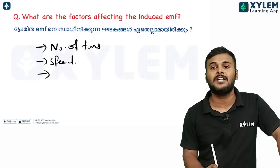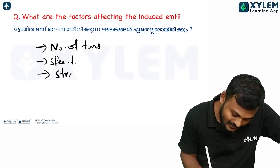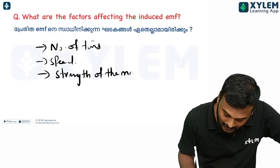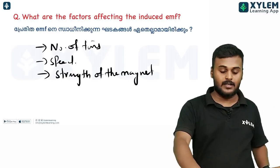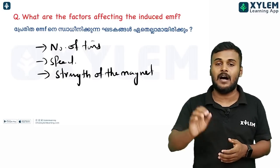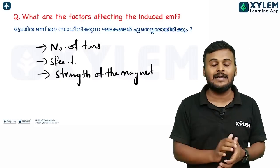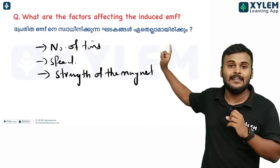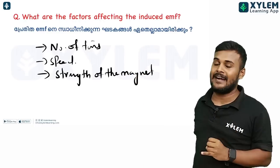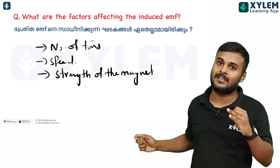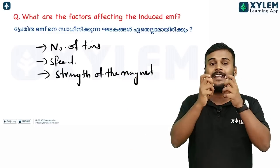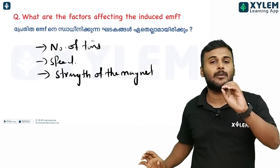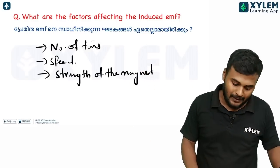The next factor is the strength of the magnet. These three factors — number of turns, speed of the magnet, and strength of the magnet — are the key factors affecting induced EMF. The speed of the magnet is very important.